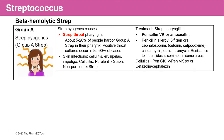Now we'll talk about the beta-hemolytic strep, which includes Group A Strep — Strep pyogenes — and Group B Strep — Strep agalactiae. Group A Strep or Strep pyogenes causes strep throat pharyngitis. About 5 to 20% of people have Group A Strep in their pharynx, and positive throat cultures occur in about 85 to 90% of cases. Strep pyogenes can also cause skin infections including cellulitis and impetigo. One important point: staph cellulitis is usually purulent, while strep cellulitis is usually non-purulent — and this affects which antibiotic you choose.